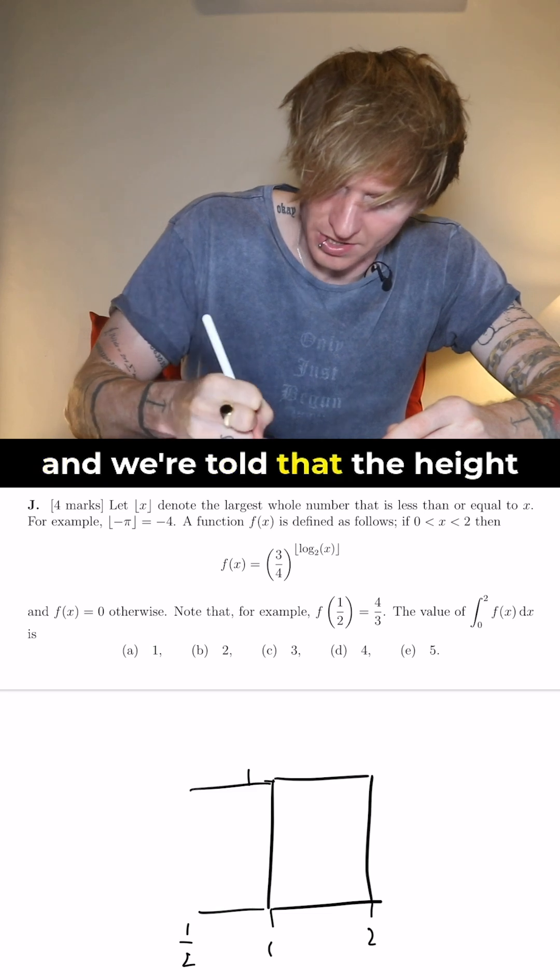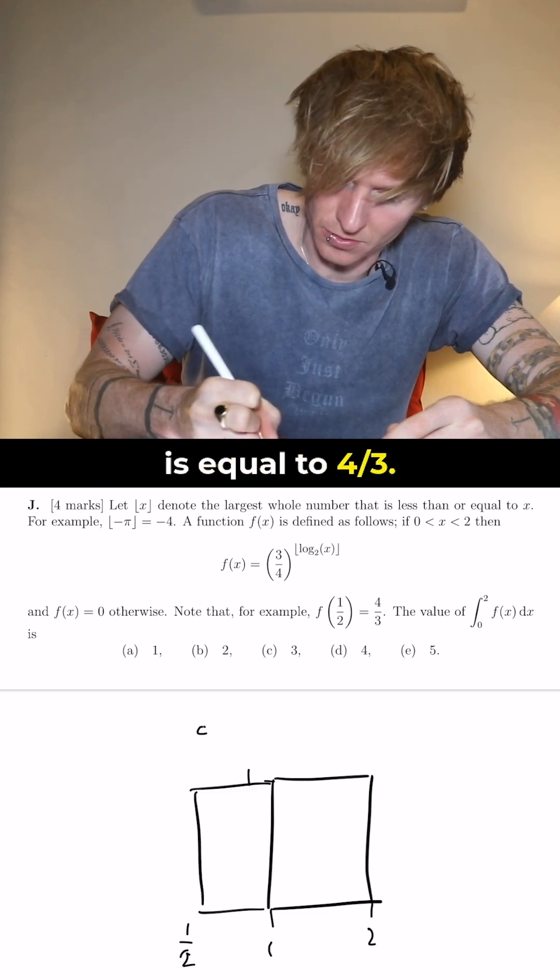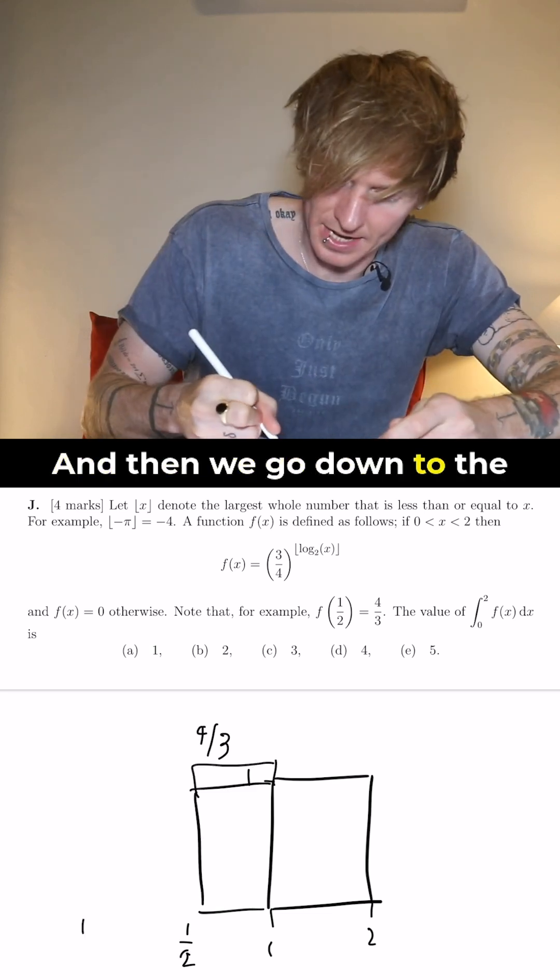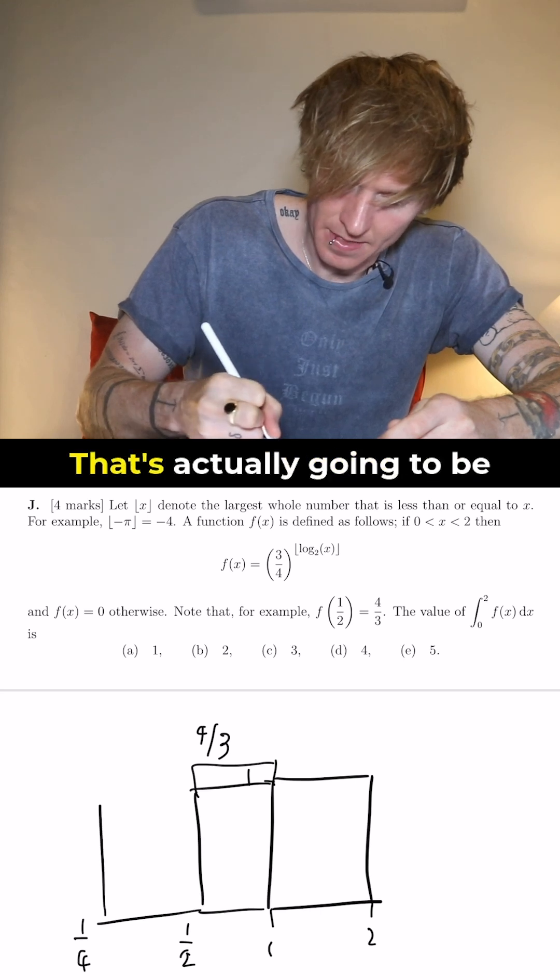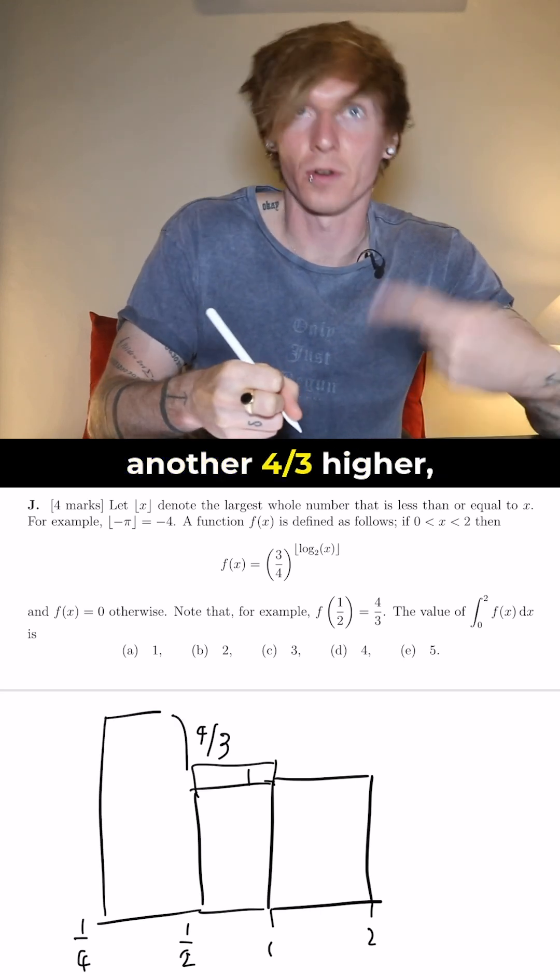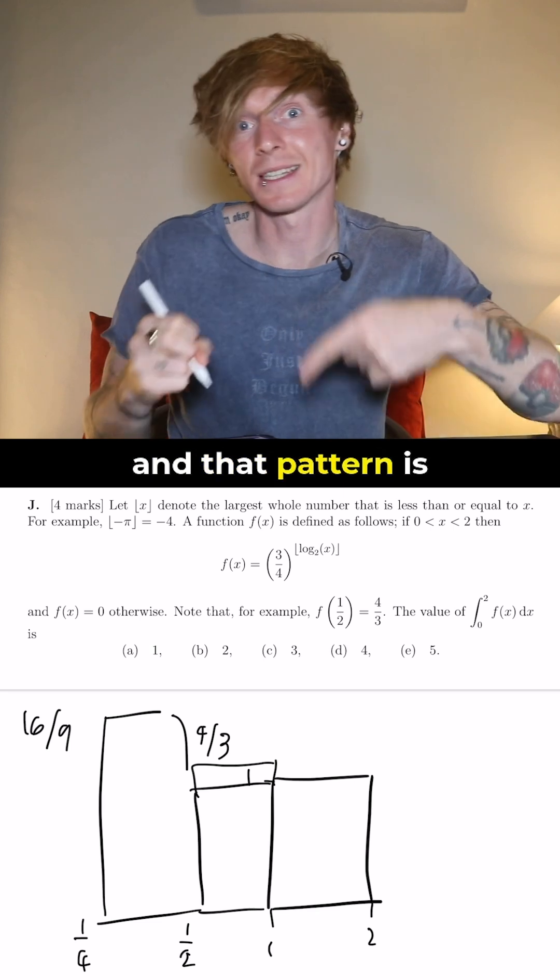Then we go down to a half and we're told that the height is equal to 4 over 3. Then we go down to the next power which is a quarter—that's actually going to be another 4 over 3 higher and that pattern is going to continue.